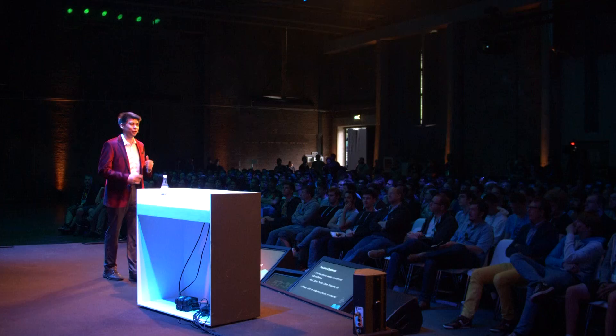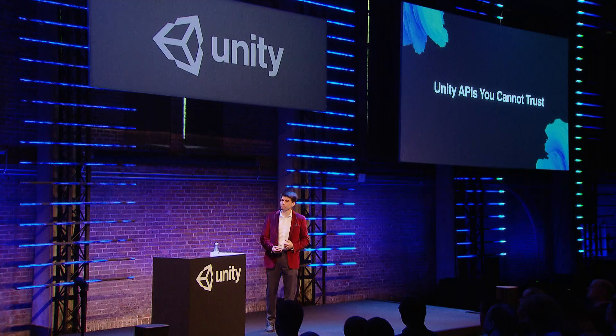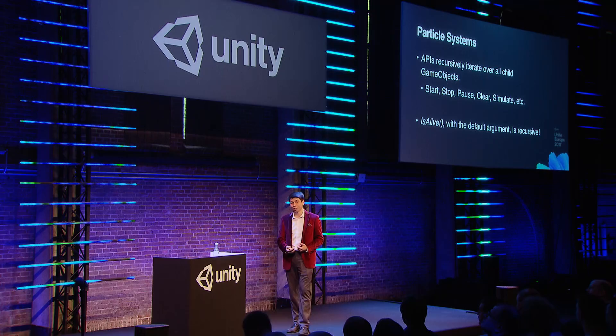We're going to start with Unity APIs that do things you may not intend — Unity APIs you can't necessarily trust. The system I'm starting with is not often discussed when talking about scripting performance: the particle system. In Unity 5, when you call one of the particle system's main APIs — like Start, Stop, or even the simple IsAlive check — it iterates recursively by default through all the children in the particle system's hierarchy.